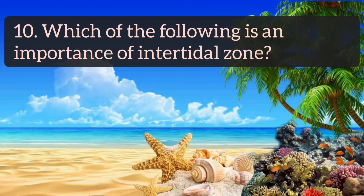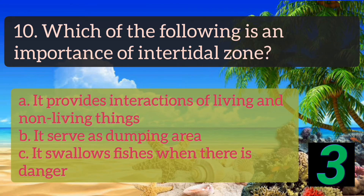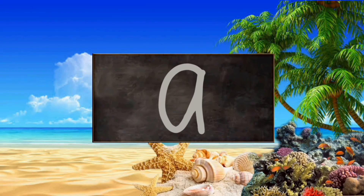Number 9: The following are habitats that can be found in the intertidal zone EXCEPT: A. Ocean, B. Coral reefs, C. Mudflats. The answer is letter A. Number 10: Which of the following is an importance of the intertidal zone? A. It provides interactions of living and non-living things, B. It serves as a dumping area, C. It swallows fishes when there is danger. It's letter A.